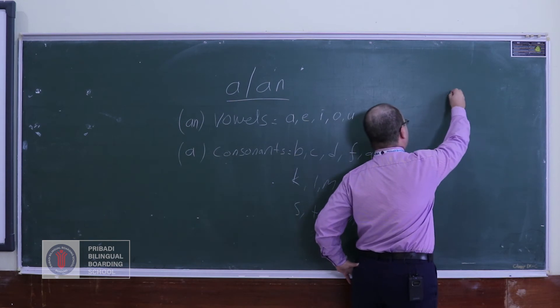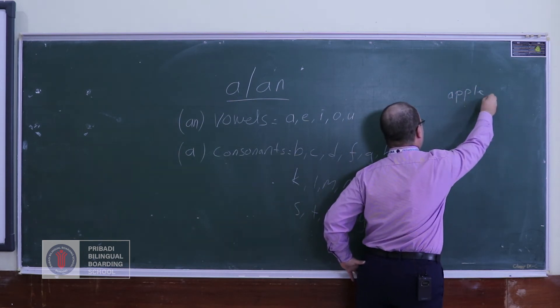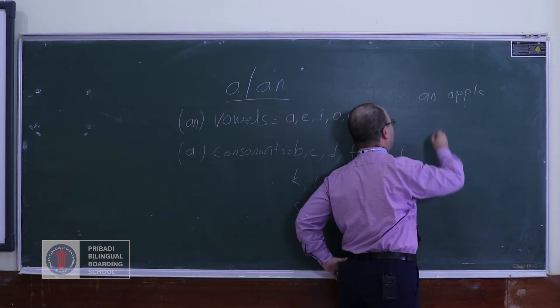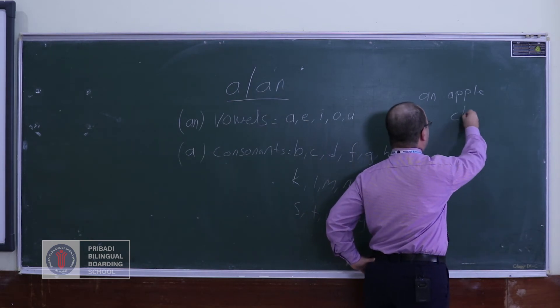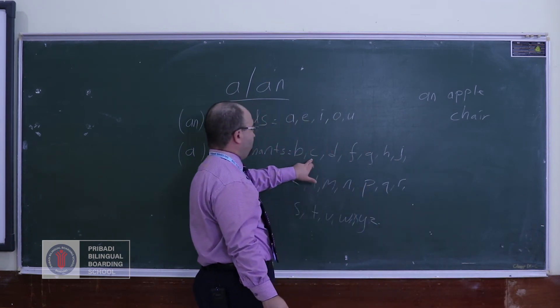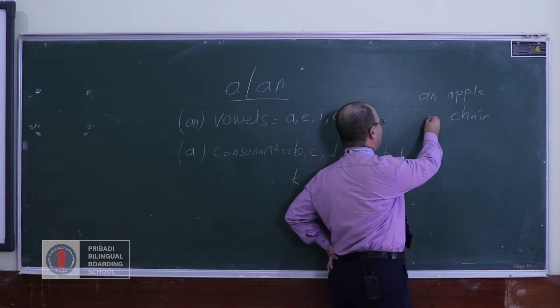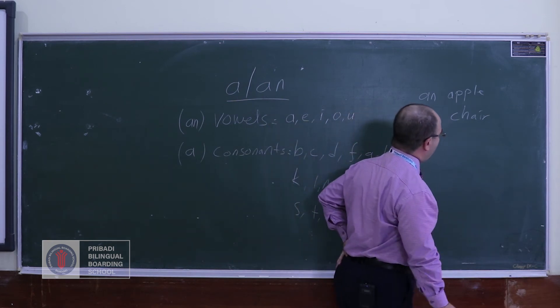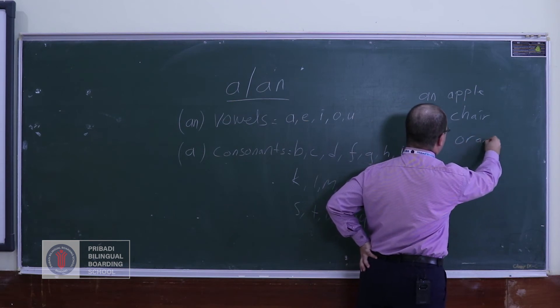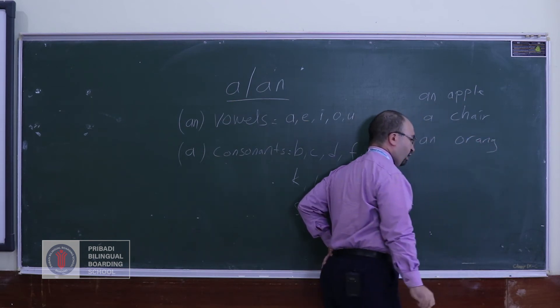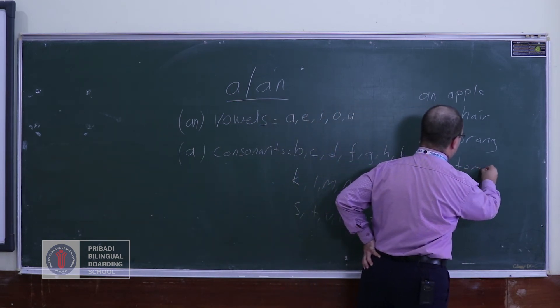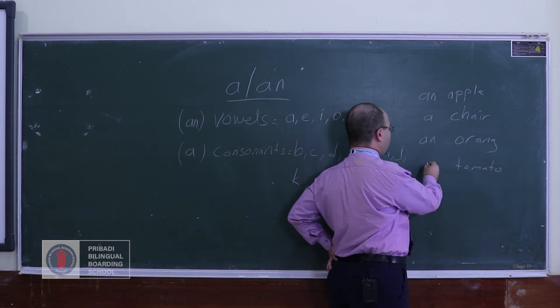For example, when we say apple we use it with 'an'. When I say a chair, chair is starting with c that is on the list of consonants, so we use 'a'. Orange is a vowel, so we use orange with 'an', and we use tomato for example with 'a', right?